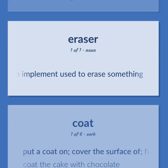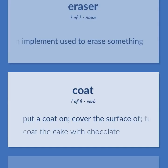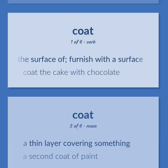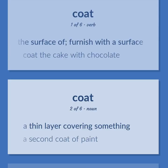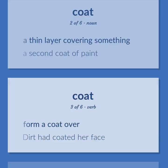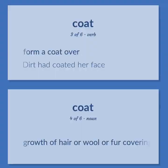An implement used to erase something. Put a coat on; cover the surface of; furnish with a surface — coat the cake with chocolate. A thin layer covering something — a second coat of paint. Form a coat over — dirt had coated her face.